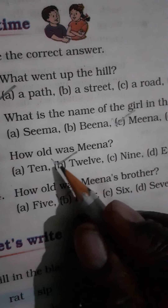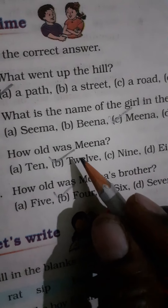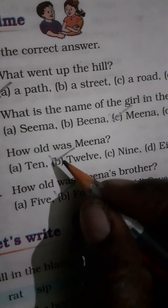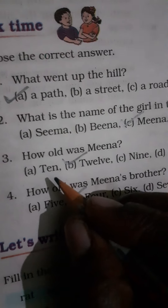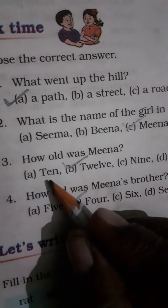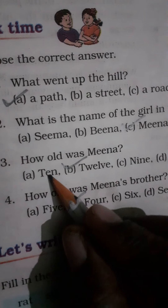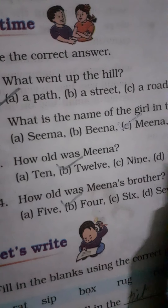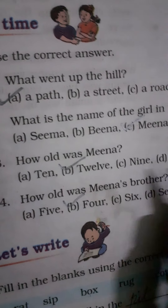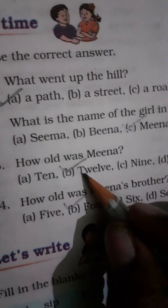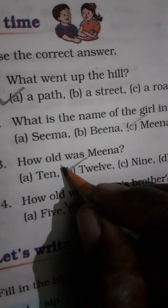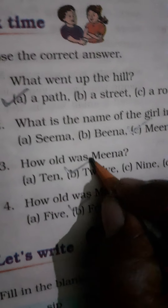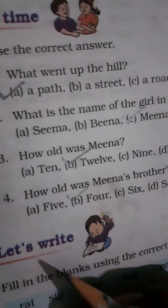Third multiple choice question: How old was Meena? Meena was twelve years old. The options are ten, twelve, nine, and eight. The answer is twelve — tick twelve.